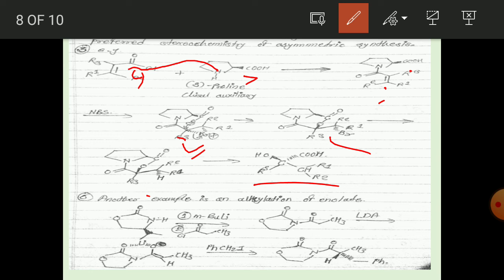Another example is the alkylation of an enolate using a chiral auxiliary. n-Butyllithium is added; it acts as a base and abstracts the proton from nitrogen. The resulting nitrogen negative charge attacks the carbonyl group of the acyl chloride, and Cl leaves.